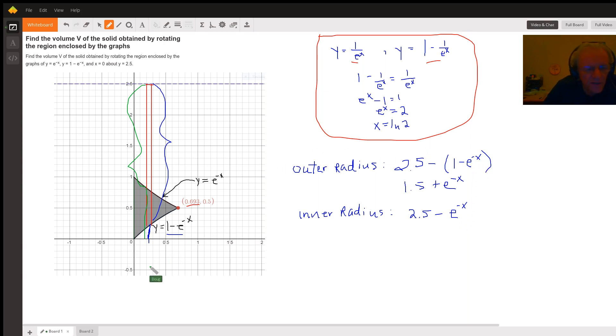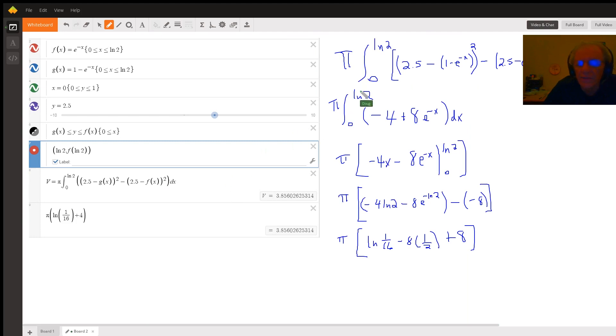If we move to the next board, you can see how I then set up the integral over here. Pi times the definite integral from 0 to the natural log of 2 of the outer radius squared minus the inner radius squared. And if you go to the trouble of simplifying this binomial like I did on the previous page, squaring that, squaring this, combining similar terms, it all simplifies to this right here. I'll leave that to the viewer.